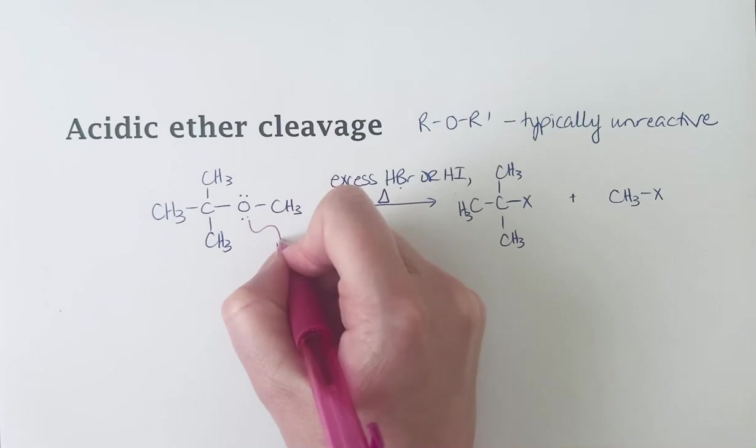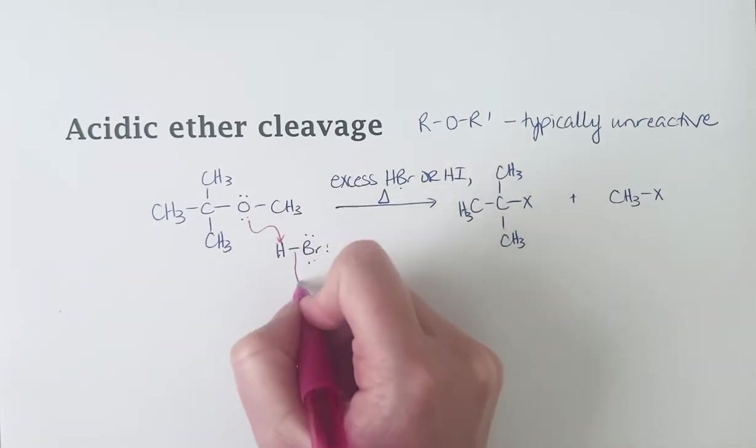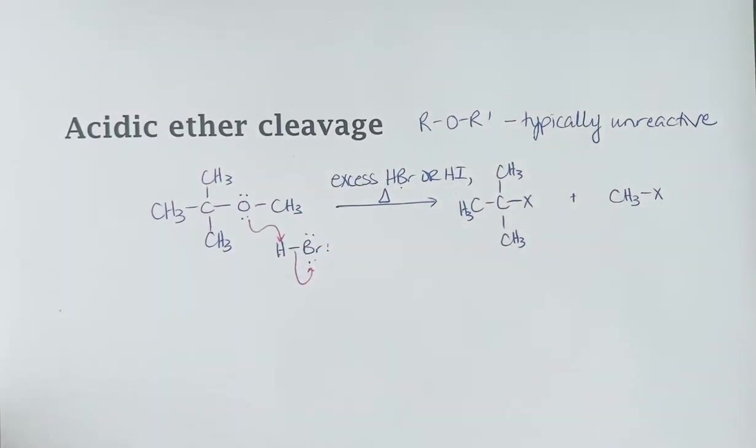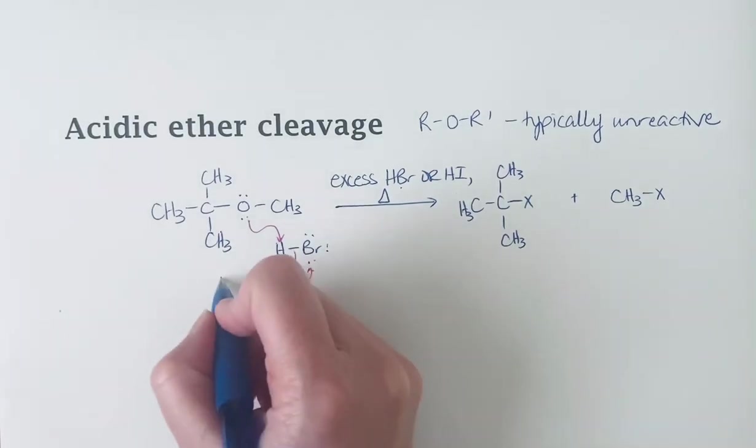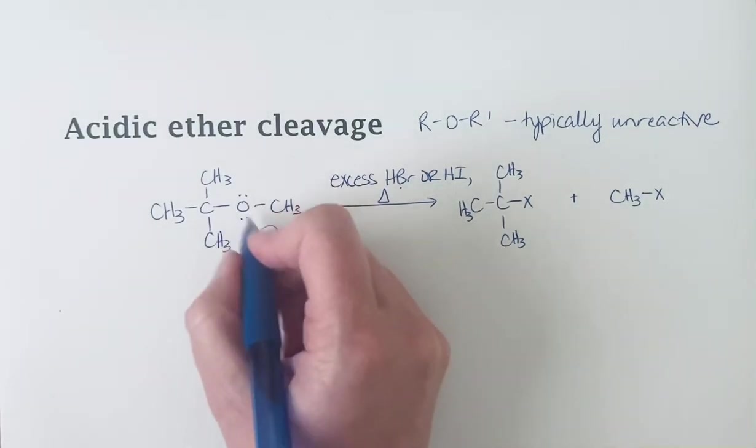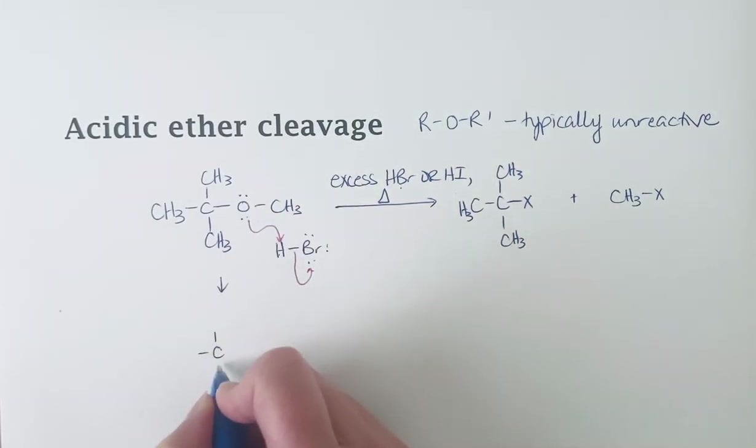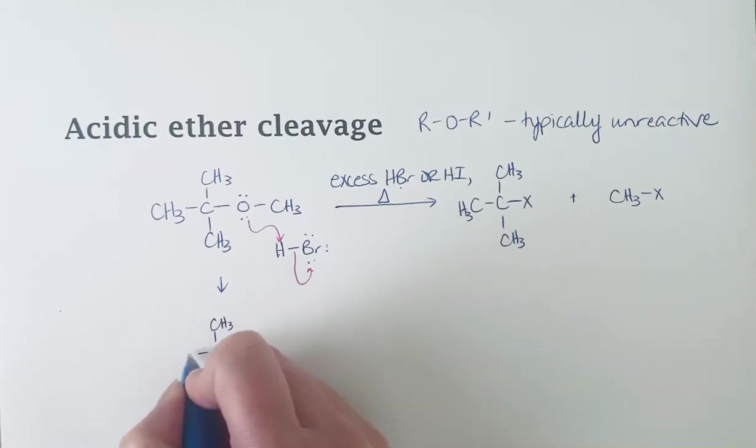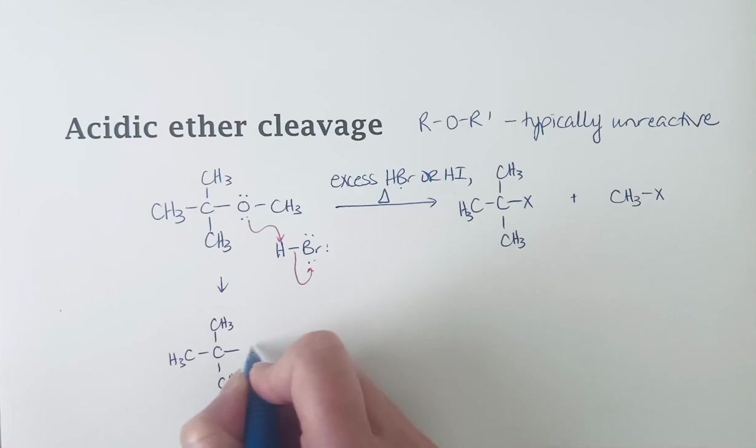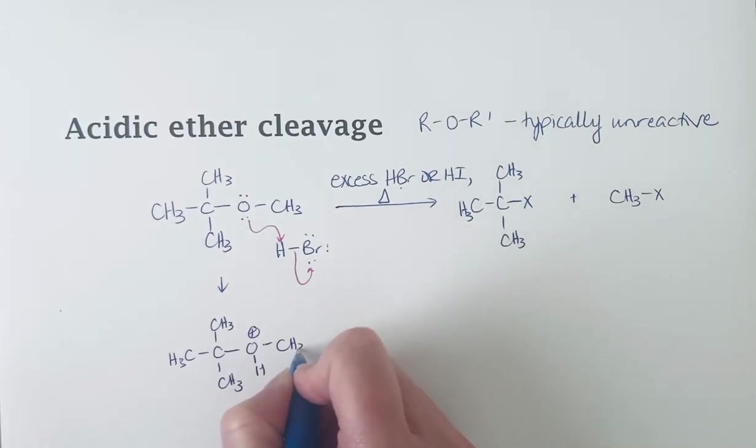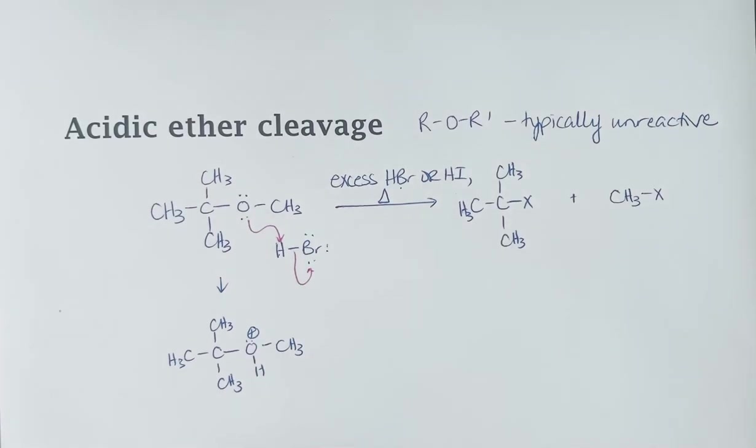We can have this alcohol attack our acid, breaking that hydrogen-bromine bond. And so what we're doing here is we're taking, we're making a good leaving group. So we've protonated this oxygen. We have seen in previous reactions that protonated oxygens make pretty good leaving groups.